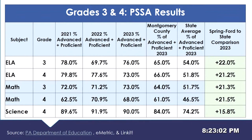This slide shows a lot of that same information just broken down in a different way — over the years of 2021, 2022, and 2023. These are the subject areas, grade levels, and the advanced and proficient for each of those. The additional data point I was able to add this year was the Montgomery County percent of proficient and advanced. For example, the third grade ELA 2023 scores for Spring-Ford were 76 percent advanced and proficient. Montgomery County was 65 percent. The state average is 54. The far right column is the difference between Spring-Ford and the state average.